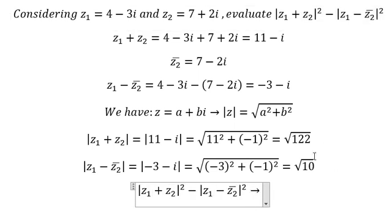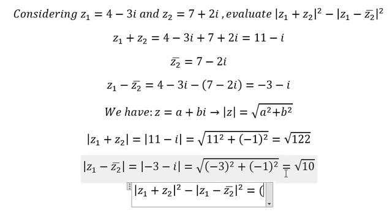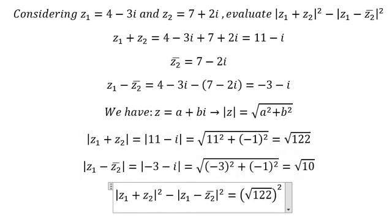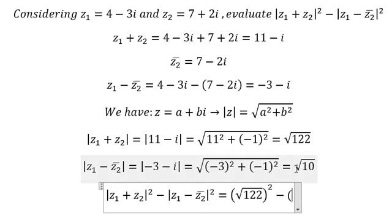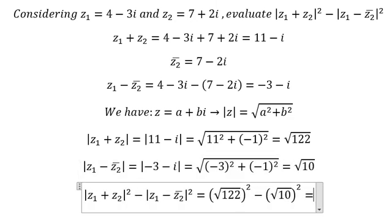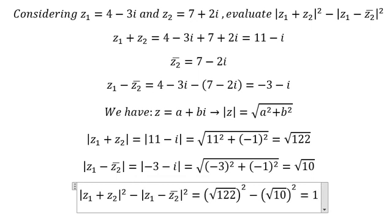So that should be the square root of 122, and we have the square root of 122 to the power of 2 minus the square root of 10 to the power of 2. So we calculate this one and we have 112.